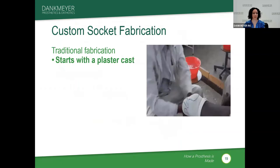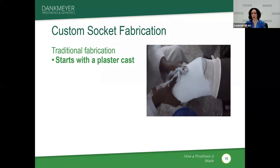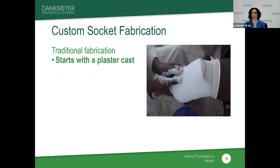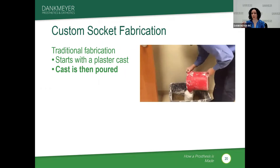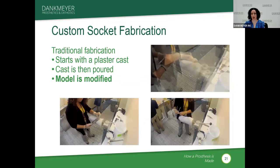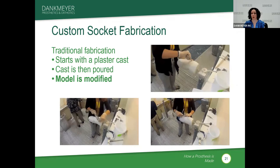Starting with the socket — traditional socket fabrication starts with a plaster cast. We take measurements of the residual limb, mark it up with an indelible pencil to mark all the bony areas, then take a cast of the limb with plaster, wrap it up, let it harden, and take it off the patient. From there, the cast is poured — we take liquid plaster and pour it into the negative model to create a positive model of the residual limb. The cast is then modified: we take it down in certain areas to increase pressure and build up areas where we want to relieve pressure.